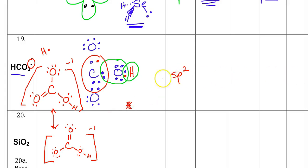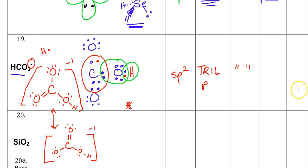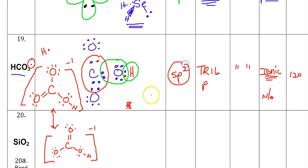These should have made sense: SP2. Now if you said SP3 and tetrahedral, fine, but in my opinion this is trigonal planar — three things going around. It is an ion, so polarity is non-applicable or ionic, it's not polar. The bond angles are 120° because of the SP2 trigonal planar shape.